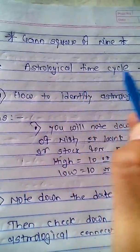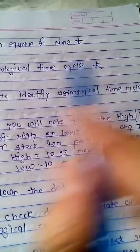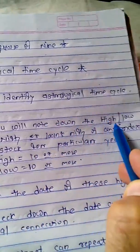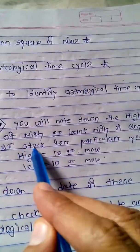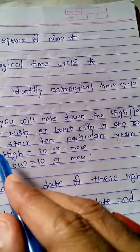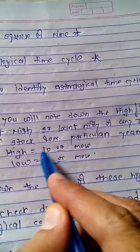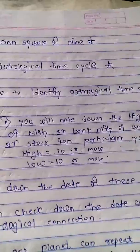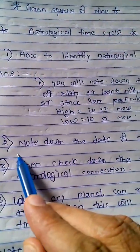Gann's Square of Nine astrological time cycle — how to identify an astrological time cycle. First, note down the highs and lows of Nifty, Bank Nifty, or any index or stock for a particular year. You may note down around ten highs and ten lows.